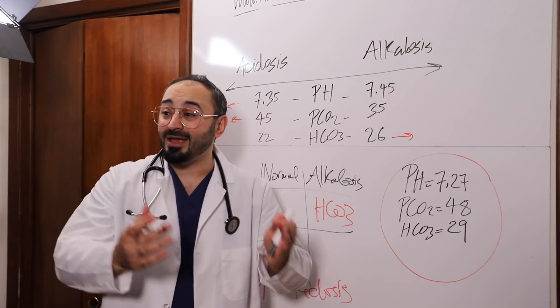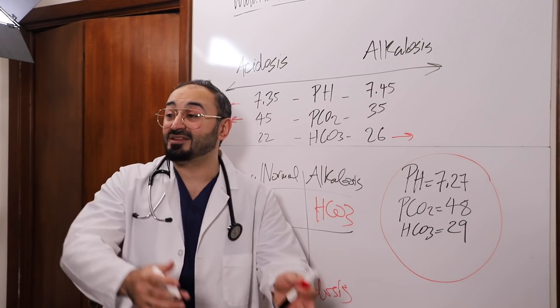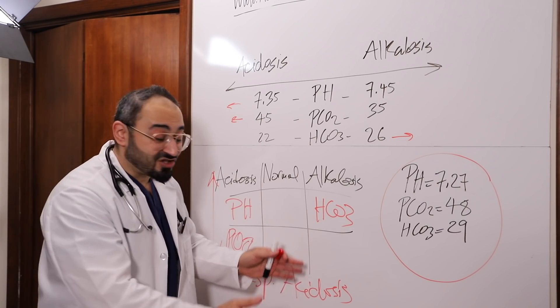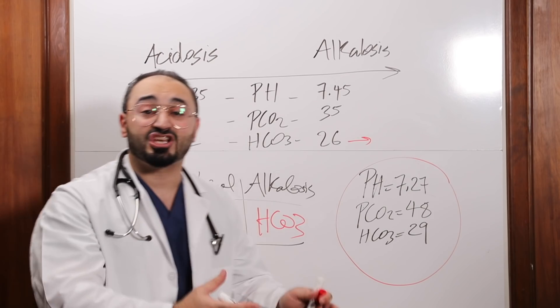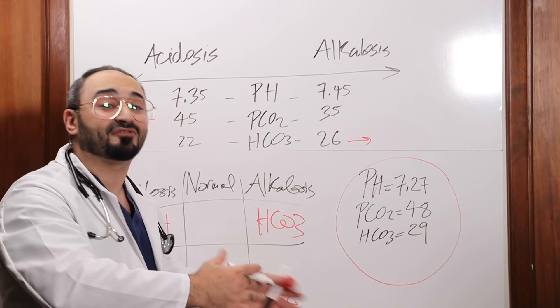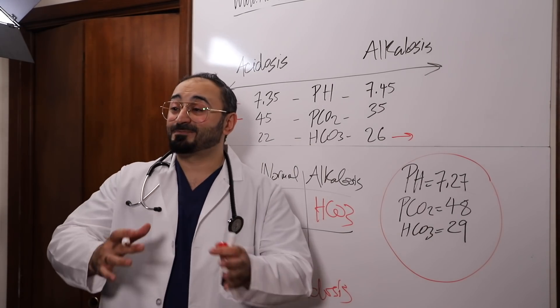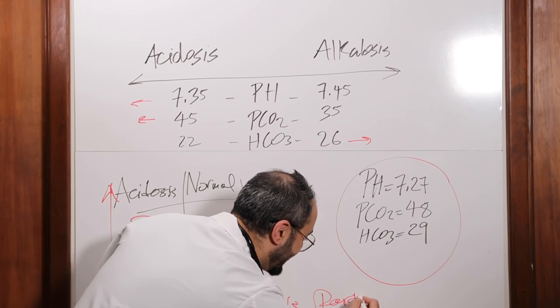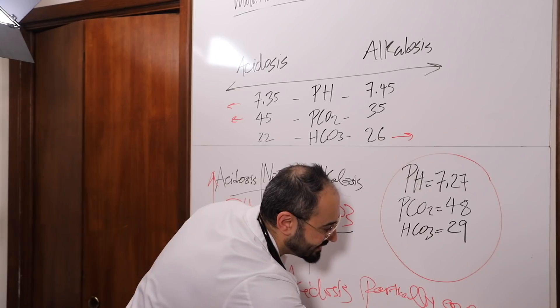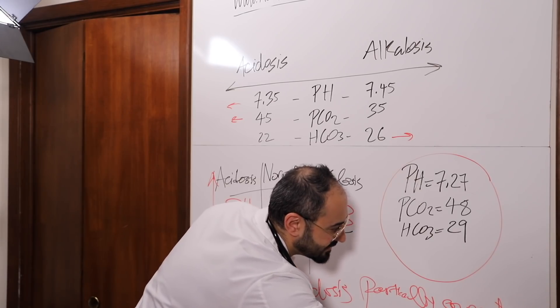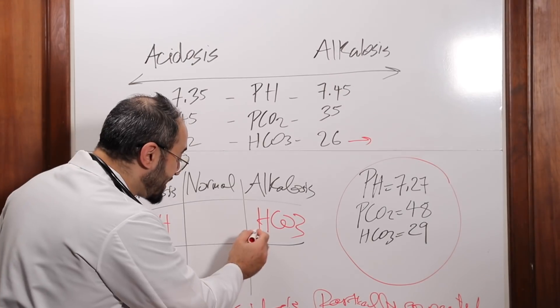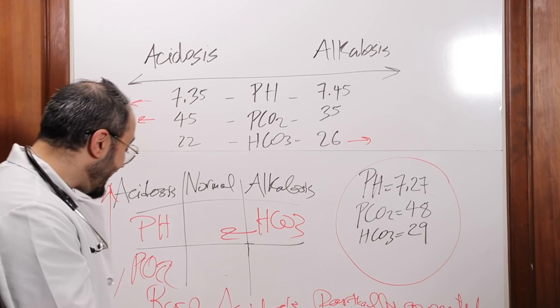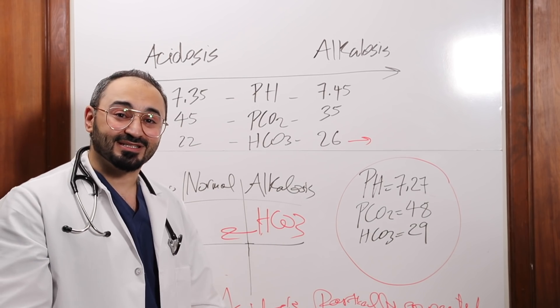So now we wanna know if our ABGs is partially compensated, fully compensated, or uncompensated. How do I know that? So since the bicarb is abnormal, that means that the kidneys are doing something to compensate for the lungs. That means it's partially compensated. So I'm gonna write, partially compensated. But if the HCO3 was normal, then it is uncompensated. It is uncompensated respiratory acidosis.